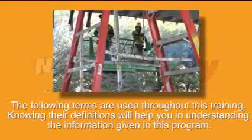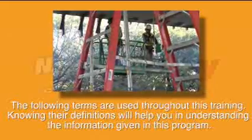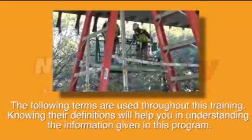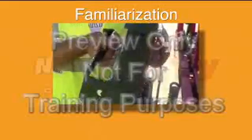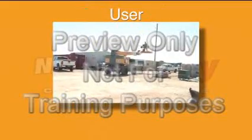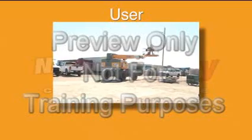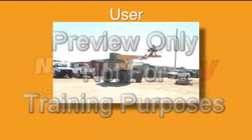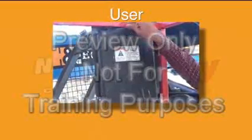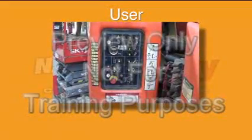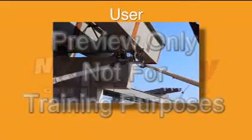The following terms are used throughout this training. Knowing their definitions will help you in understanding the information given in this program. Familiarization: operators becoming familiar or acquainted with a specific MEWP for the purpose of and before operating the MEWP. User: a person that has care, custody, and control of the MEWP. A user is responsible for ensuring the operator is familiar with the location of the manufacturer's operation manuals, the purpose and function of all controls, features, and devices.